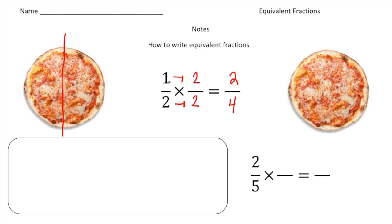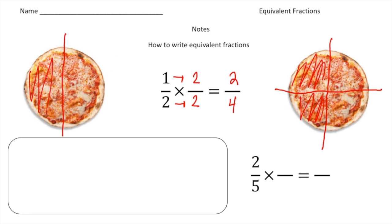I could have multiplied one half by any common factor — it could have been three over three or four over four — and it would have resulted in an equivalent fraction equal to one half. To prove that it's the same fraction, I'm going to take the same pizza and cut it into four parts. If you notice, two of the four parts is equivalent to one of the two parts over here. So one half equals two fourths.